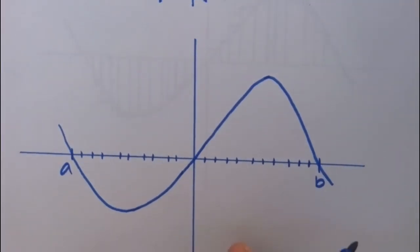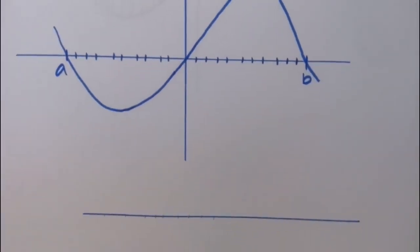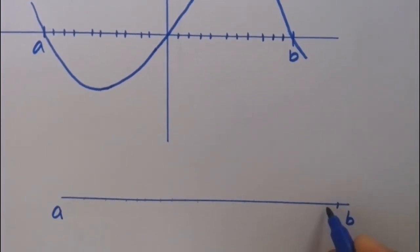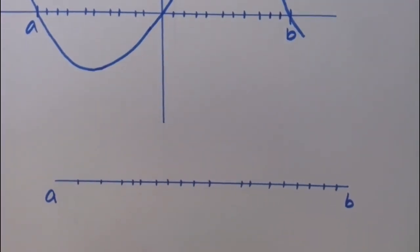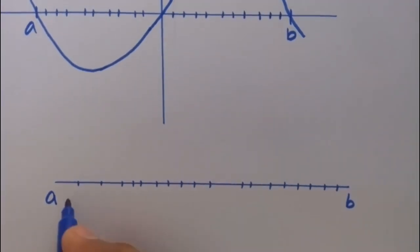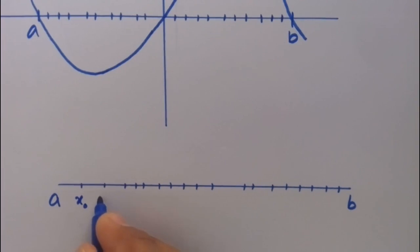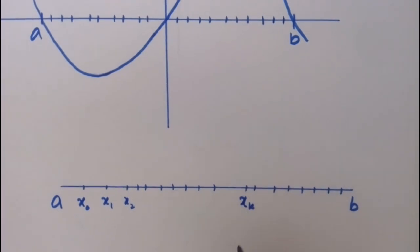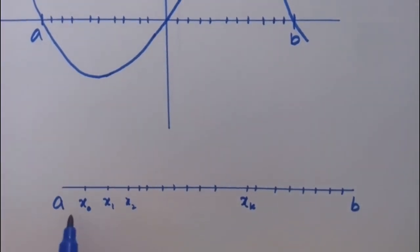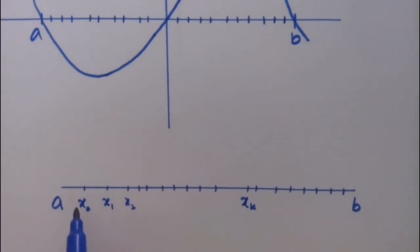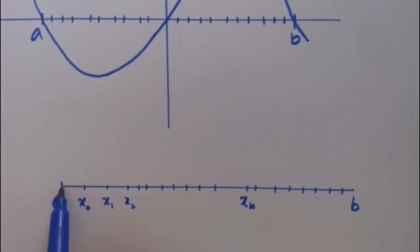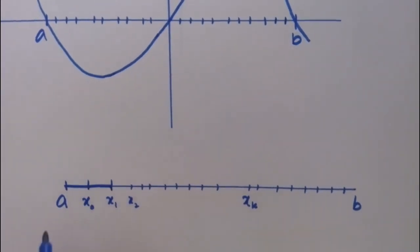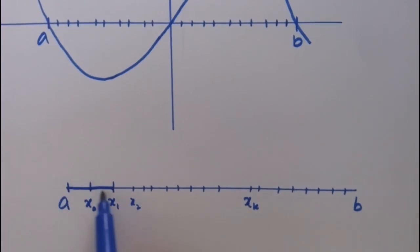Now we will draw this interval here. So this is a and this is b. Partitions are similar to this, and these are the partition points. So this is x0, x1, x2, and xk. Now if we consider a, then x0 is this distance measurement, x1 is this distance measurement, and the part of xk is this distance measurement.